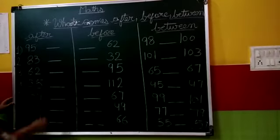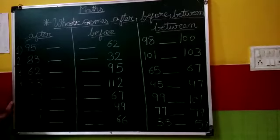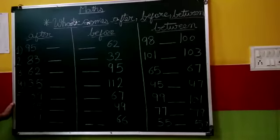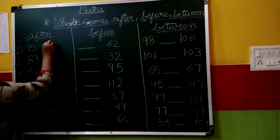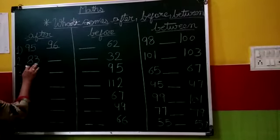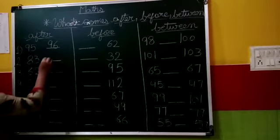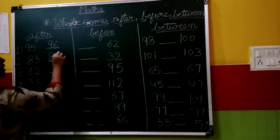So today we will first do after. After means what comes after? 95. What comes after 95? 96. 83. What number comes after 83? 84.